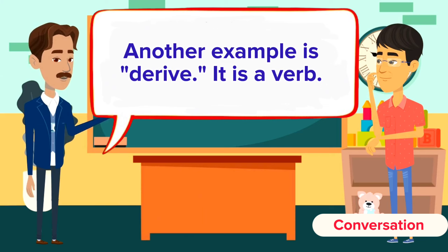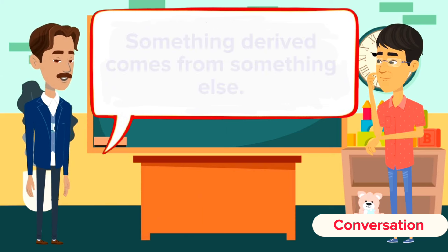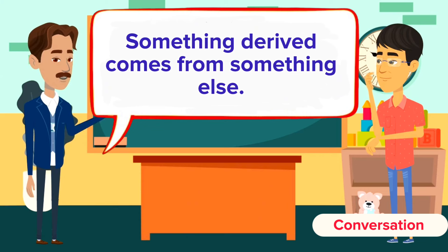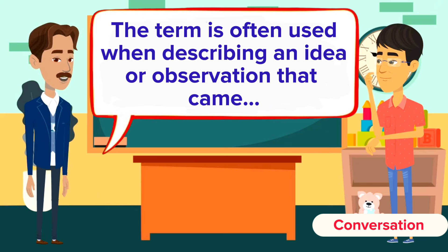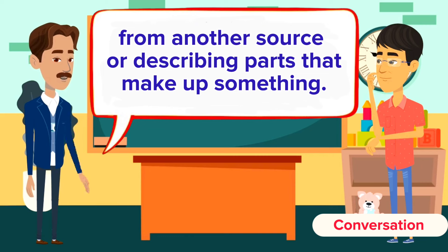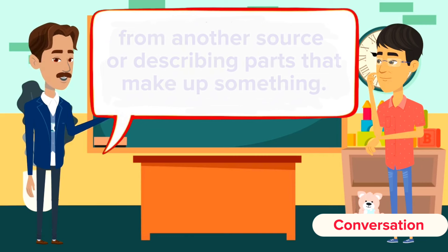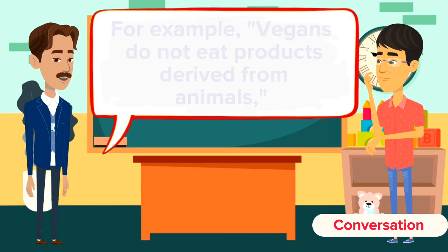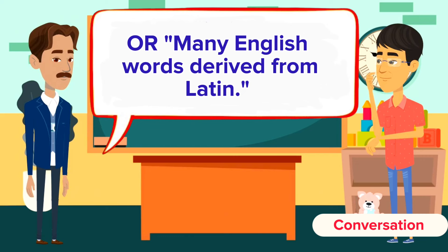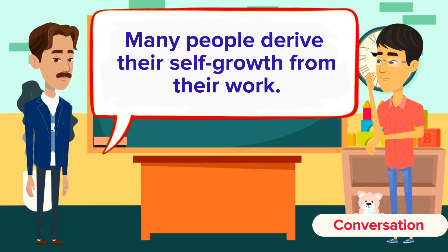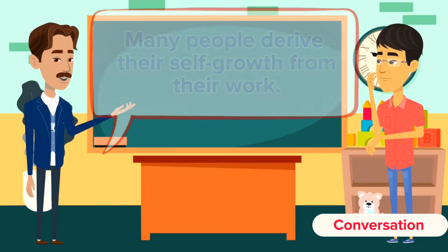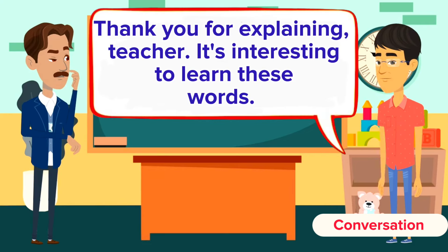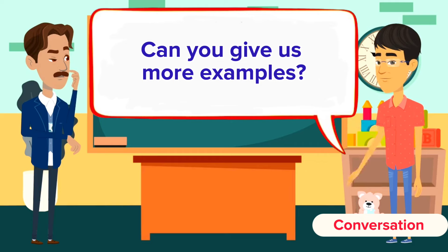Another word is 'derive.' It is a verb. Something derived comes from something else. The term is often used when describing an idea or observation that came from another source, or describing parts that make up something. For example: vegans do not eat products derived from animals, or many English words are derived from Latin, or many people derive their self-growth from their work. Thank you for explaining, teacher — it's interesting to learn these words. Can you give us more examples?